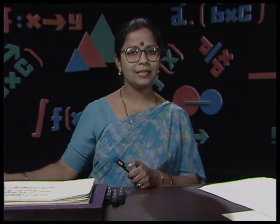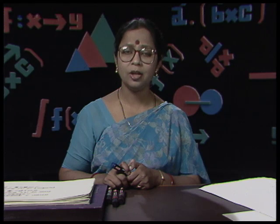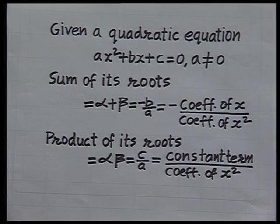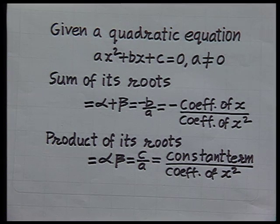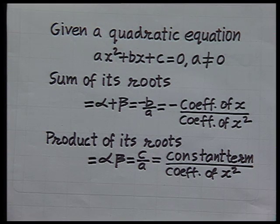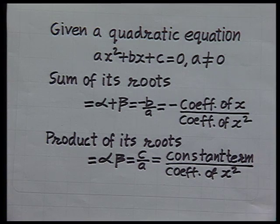We also learned to find the sum and the product of the roots of a given quadratic equation without actually finding the roots. That is, given a quadratic equation ax² + bx + c = 0 (a ≠ 0), the sum of its roots is alpha + beta = -b/a, which is minus the coefficient of x upon the coefficient of x². The product of the roots is alpha × beta = c/a, which is the constant term upon the coefficient of x².